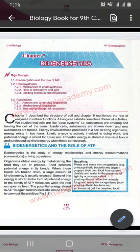My name is Neelam. Today we will start Chapter number 7, Class 9th Biology, that is Bioenergetics. The main objectives and major concepts we will study include: Bioenergetics and the role of ATP, Photosynthesis and the mechanism of photosynthesis including light and dark reactions, and aerobic and anaerobic respiration. Today we will start with Bioenergetics.